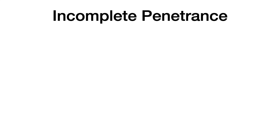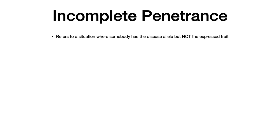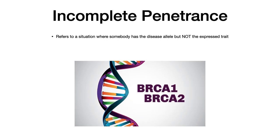Incomplete penetrance refers to a situation where somebody does have the diseased allele but does not express the trait that allele can lead to. The most high-yield clinical example is the BRCA1 mutation. Just because you have the BRCA1 mutation does not mean you will 100% develop breast cancer — it's not guaranteed. Incomplete penetrance is the situation where you have the diseased allele but not necessarily the expressed disease.